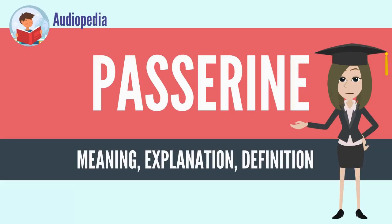A passerine is any bird of the order Passeriformes, which includes more than half of all bird species. Sometimes known as perching birds or, less accurately, as songbirds, passerines are distinguished from other orders of birds by the arrangement of their toes — three pointing forward and one back — which facilitates perching.